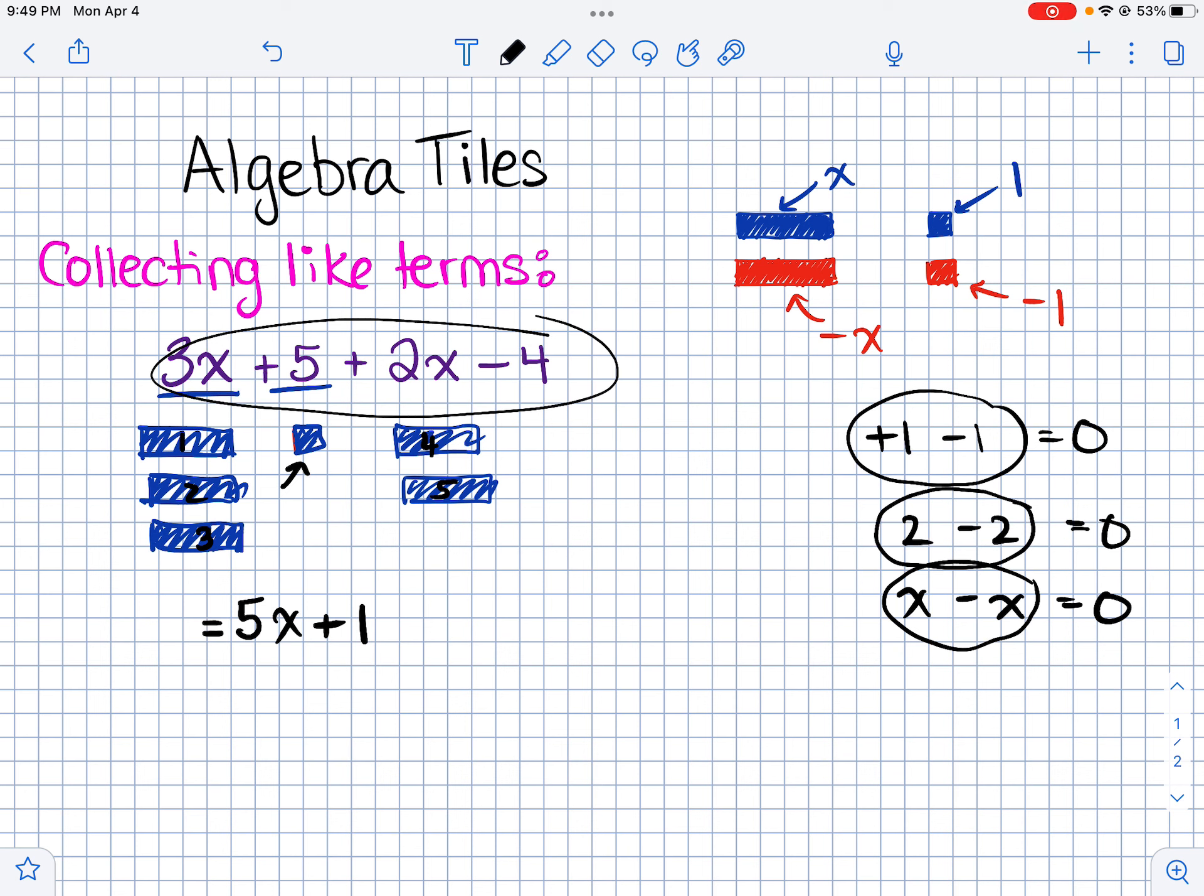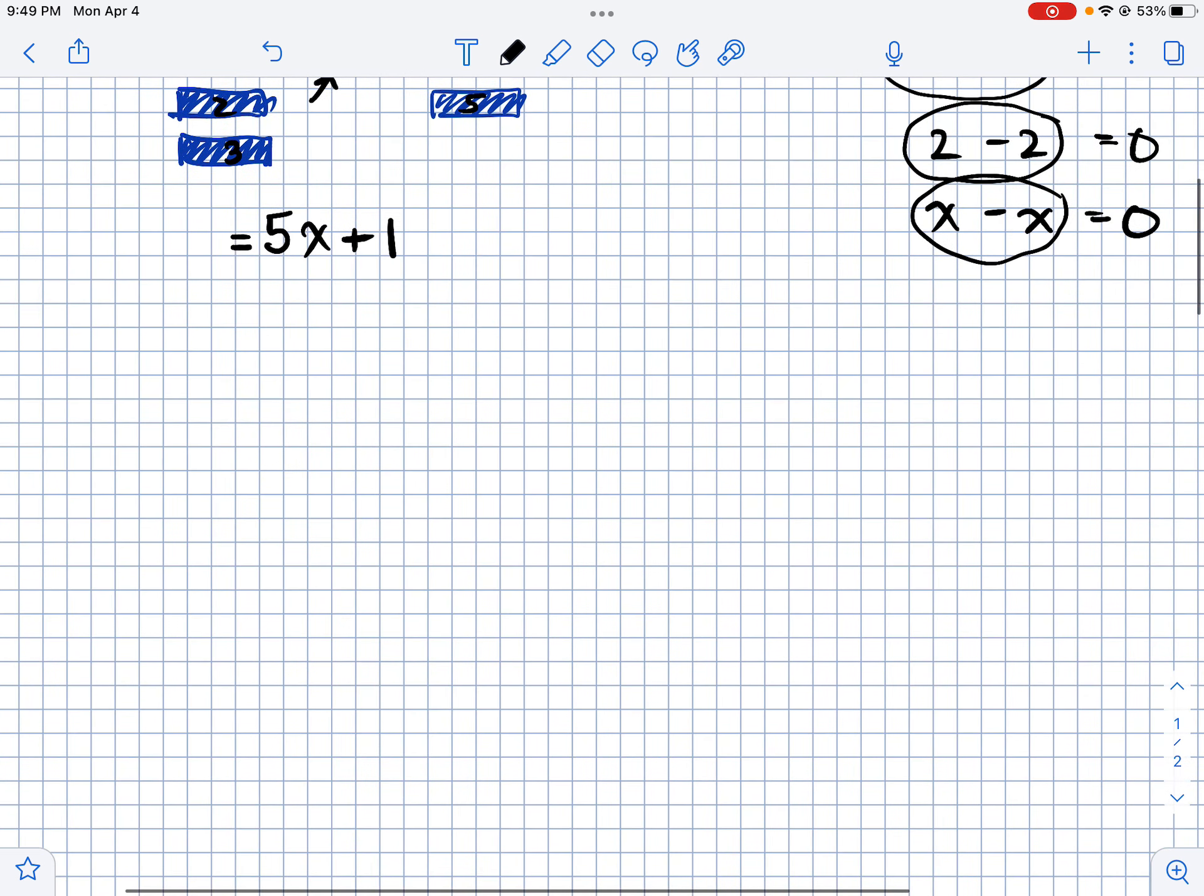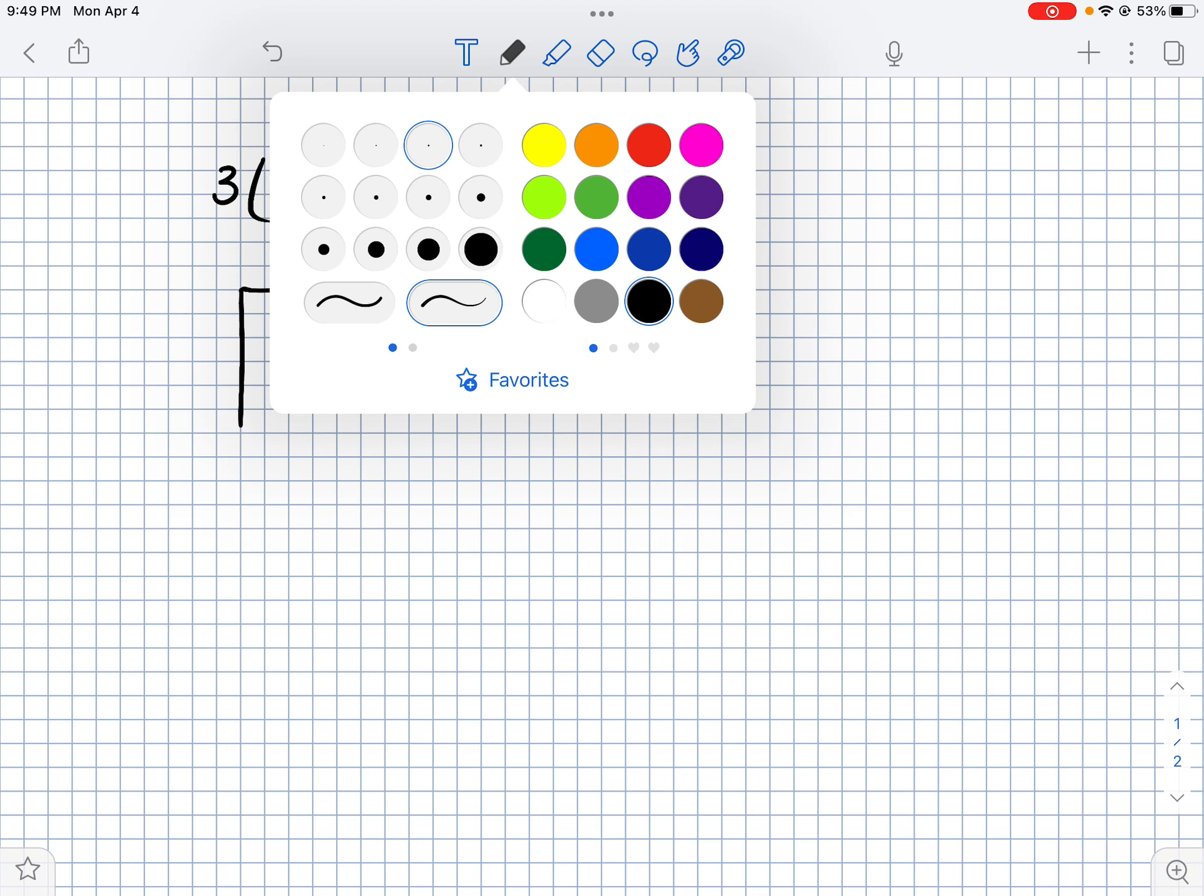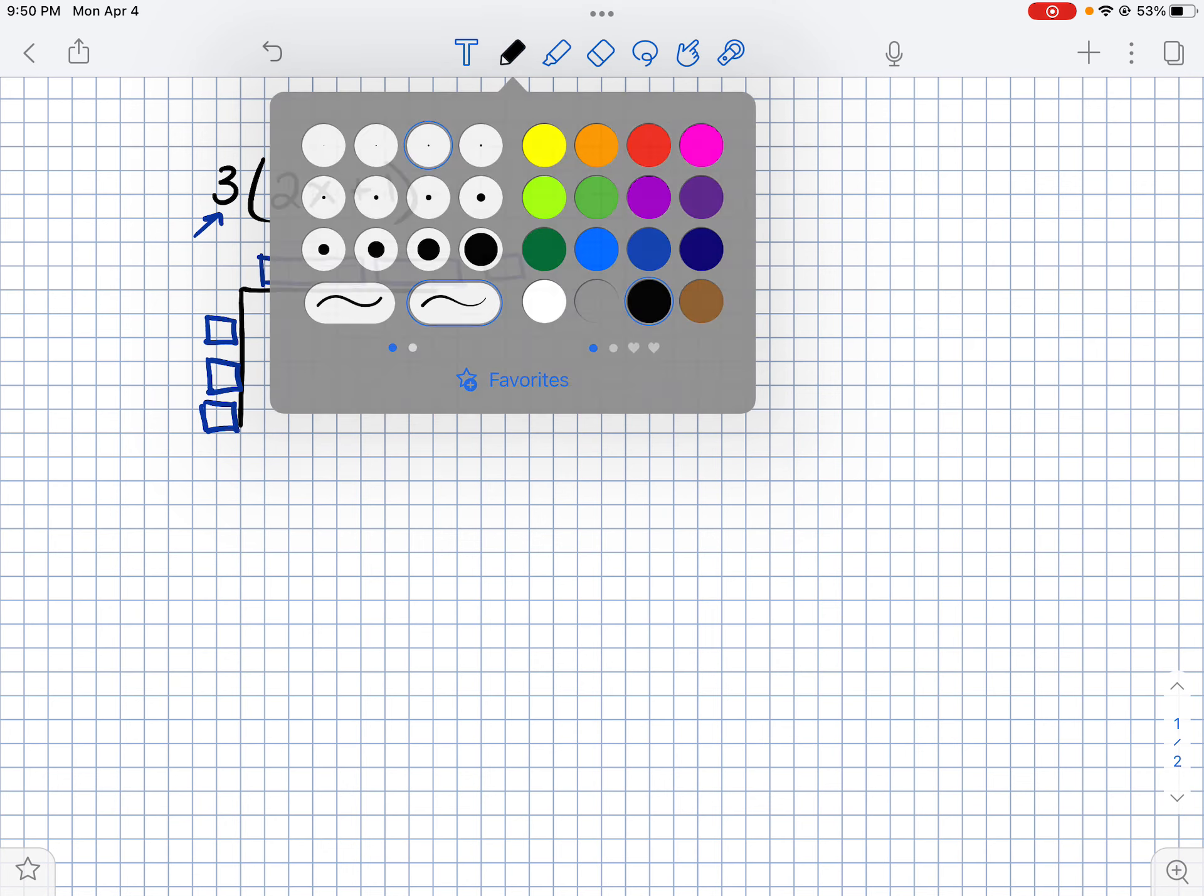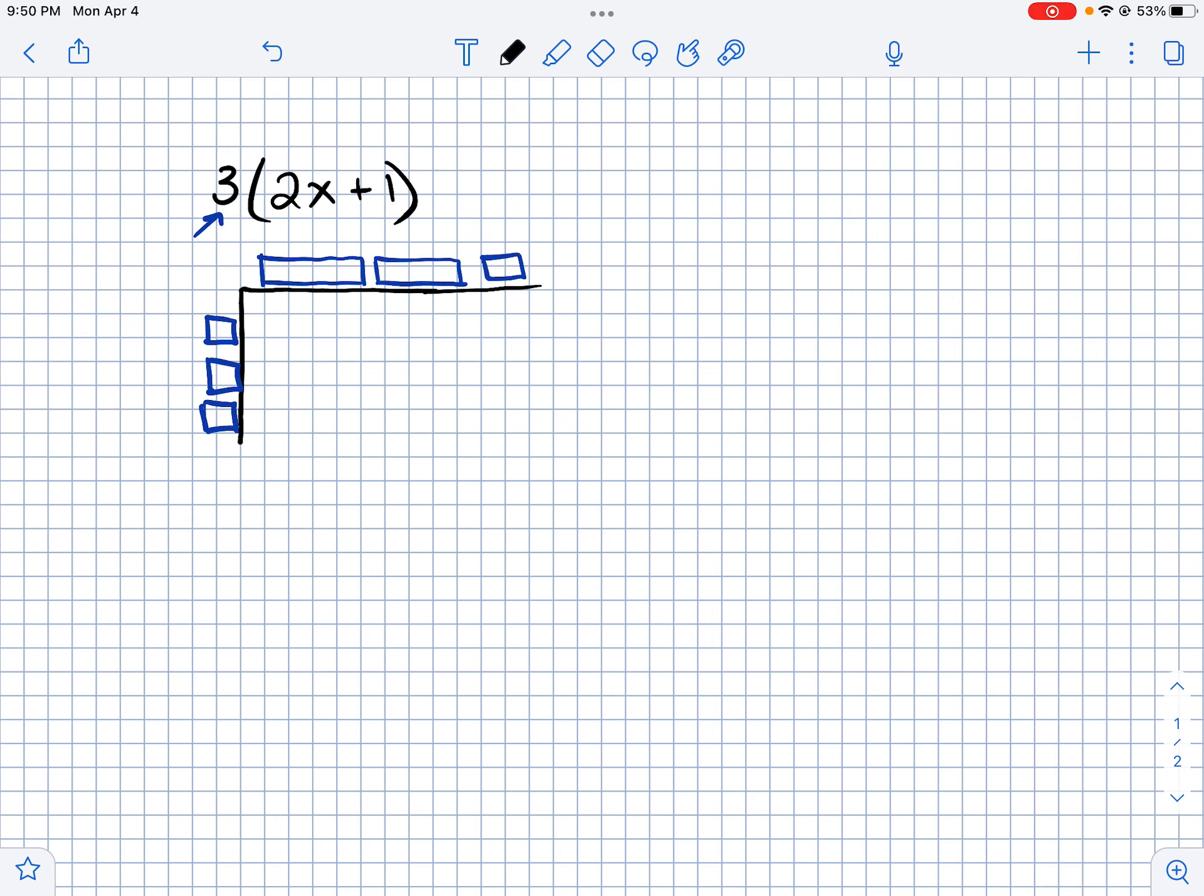We can also expand using algebra tiles. So if you had an expression like 3 times 2X plus 1, you could use algebra tiles to expand. So what you would do is you would set up that little grid. So we're doing 3, so I'm going to get 3 ones: 1, 2, 3. And I'm multiplying it by 2 X's. So 1, 2, plus 1 single.